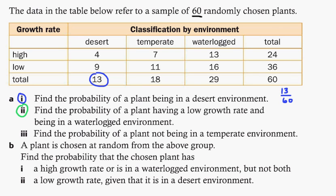Find the probability of a plant having a low growth rate and being in a waterlogged environment. The key word there is and. If it said or, you would count all the low growth rates in all the waterlogs, but it says and, so it has to be low and waterlogged. So that would be this one right here. So that one's going to be 16 out of 60.